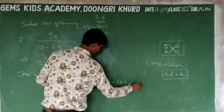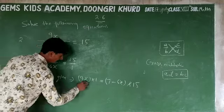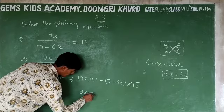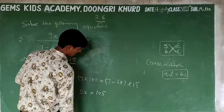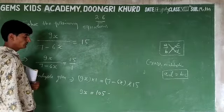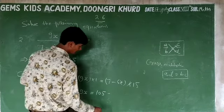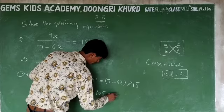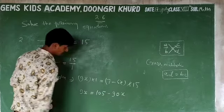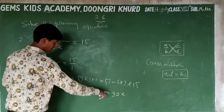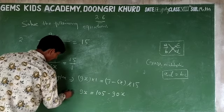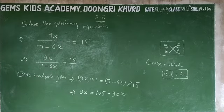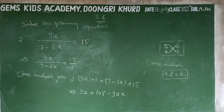Cross multiplying gives: 9x multiplied by 1 equals 7 minus 6x multiplied by 15. So 9x equals 105 minus 90x.